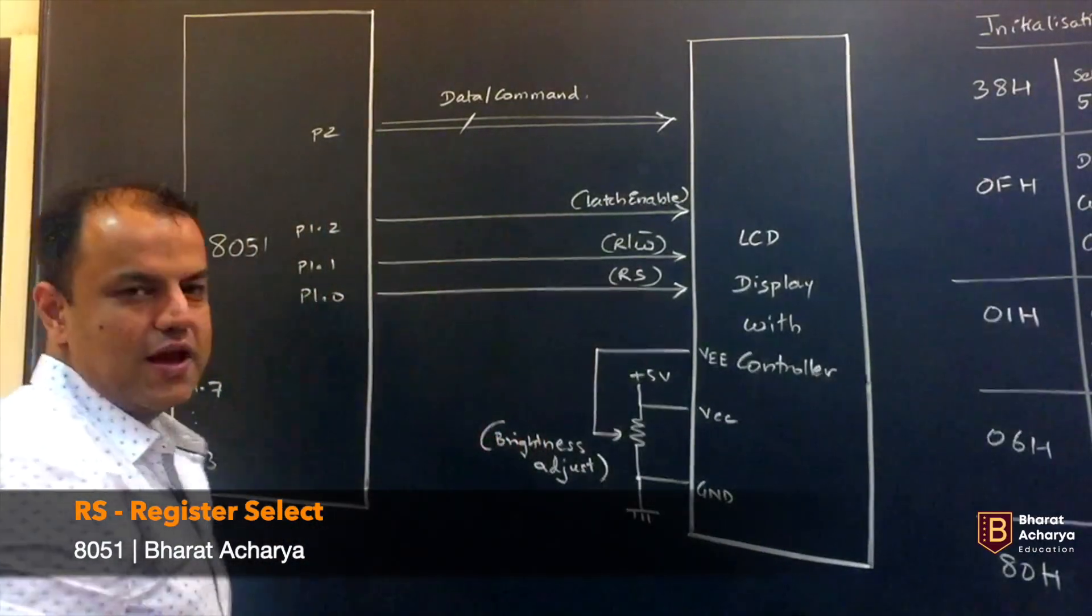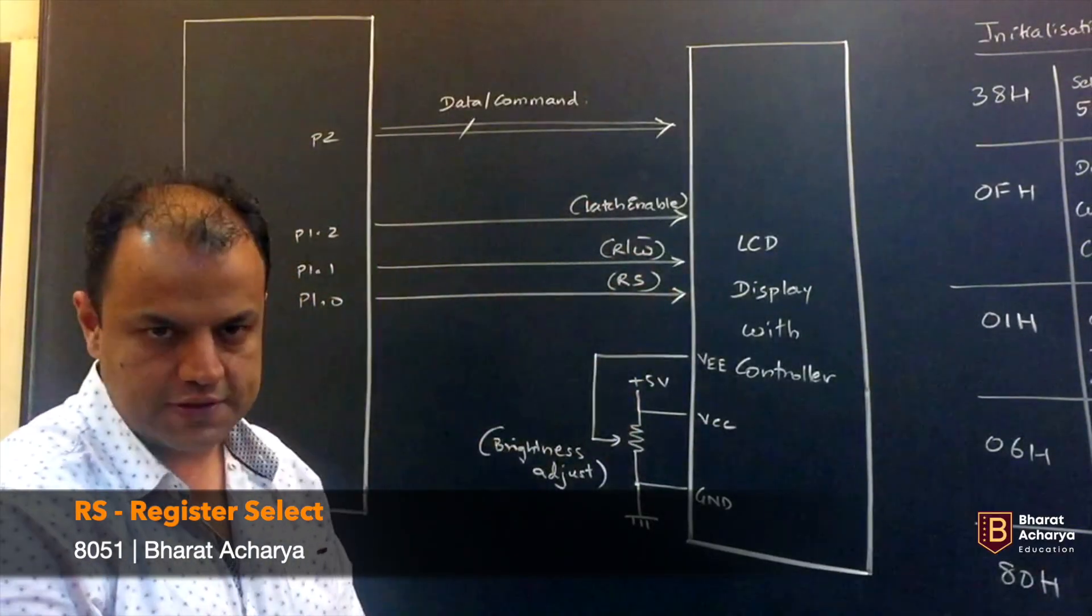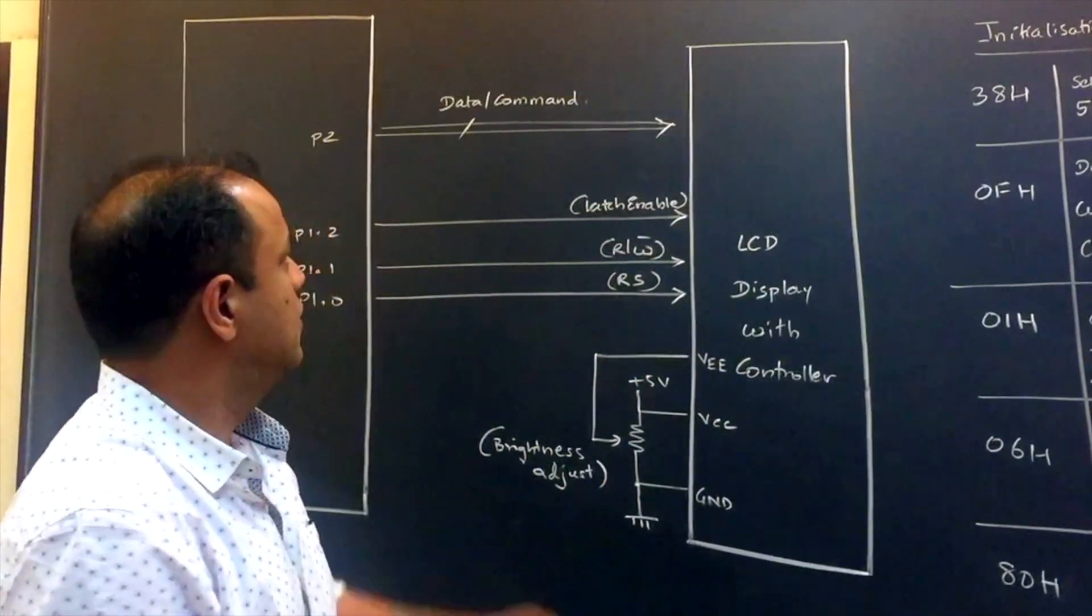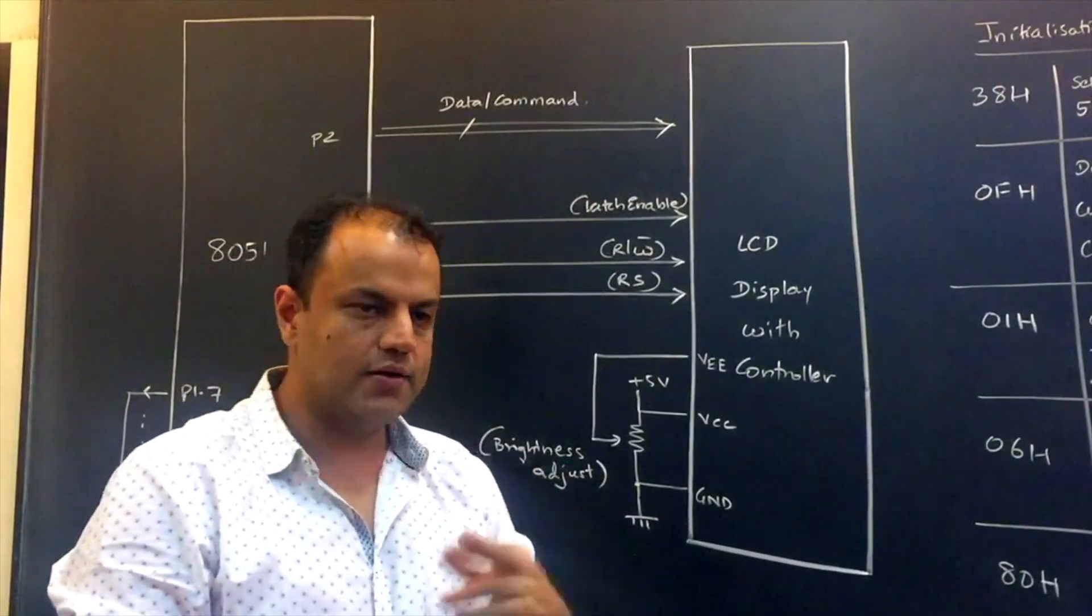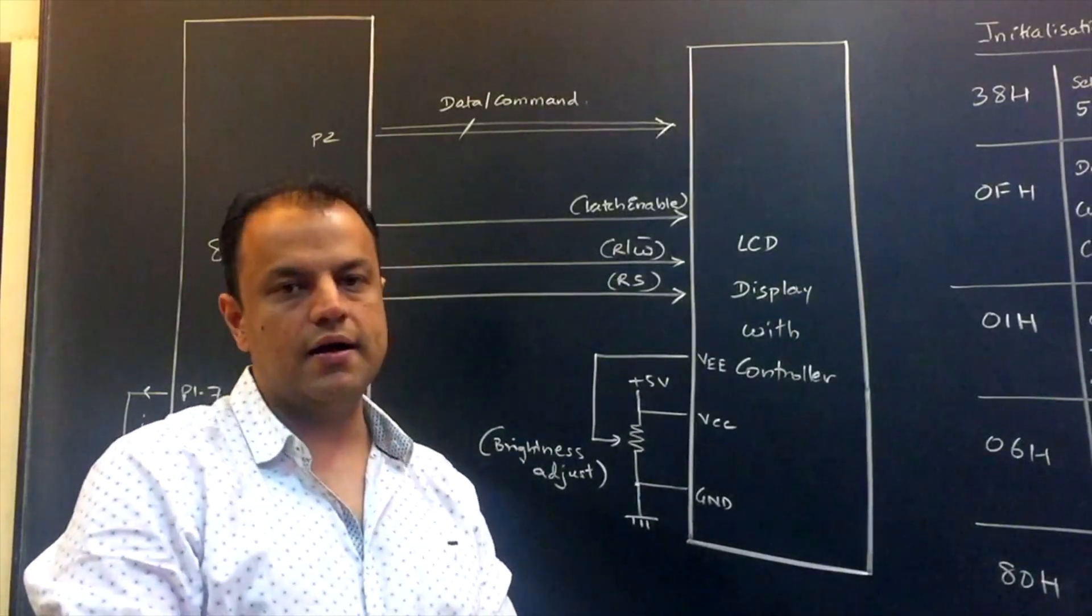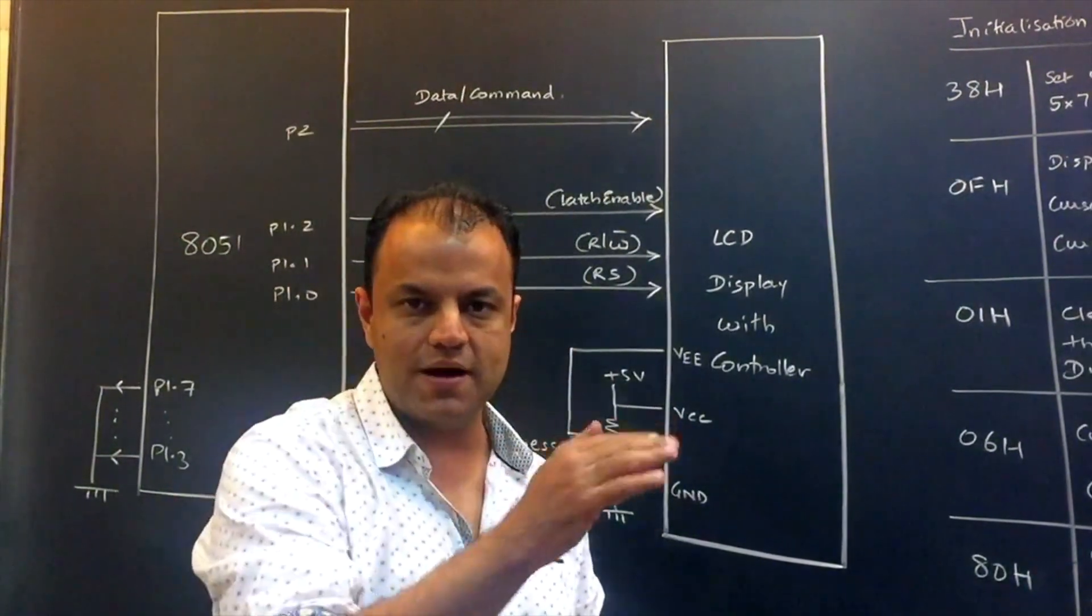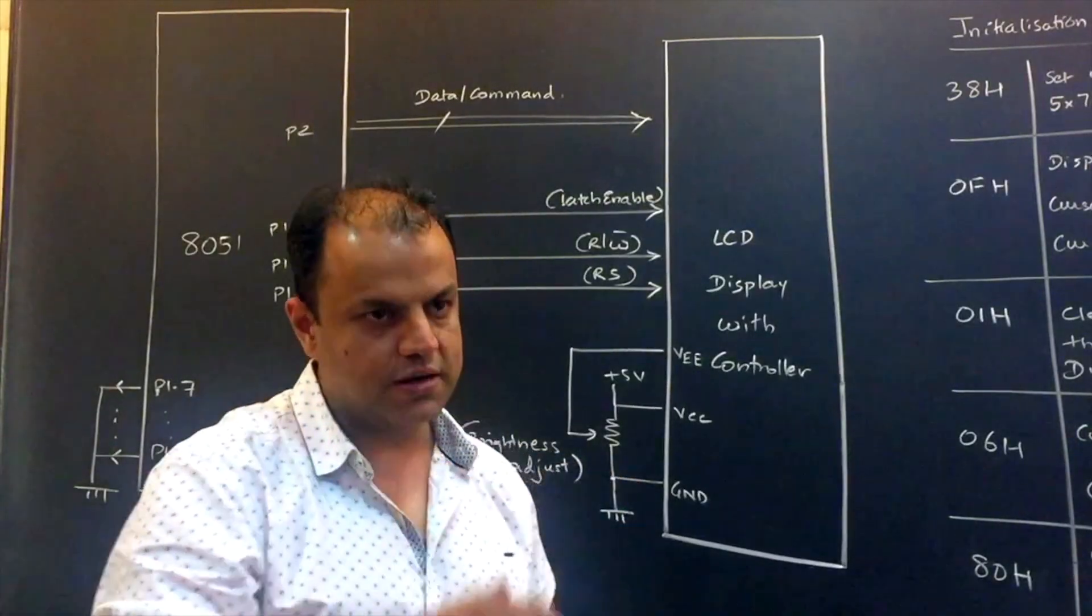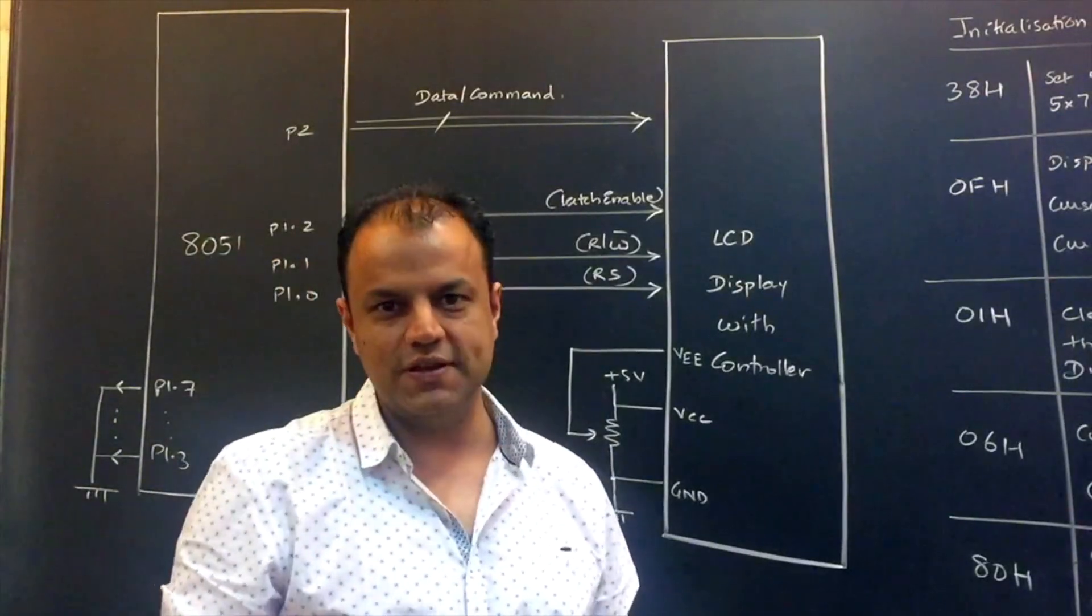Then there is something called RS. RS stands for Register Select. Now what did I tell you 5 minutes back? You send commands to this display to decide how it's going to work. You also send data, which is the data to be displayed. So both the things, data and command, are given through the same bus.